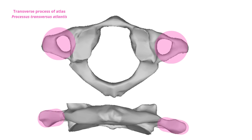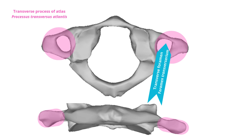Transverse process. The transverse process projects inferolaterally from each lateral mass of the atlas. The transverse processes of the atlas are the second longest of all the cervical vertebrae. They act as strong levers for the muscles that assist in the rotation of the head. The broad apex of the transverse process is homologous to a typical cervical posterior tubercle. Each transverse process is formed by anterior and posterior roots that extend laterally and merge, with a small hole between them called the transverse foramen. The transverse foramen of the cervical vertebrae allow the vertebral artery and vein to pass through, ascending and descending to supply and drain the regions of the brain, respectively.